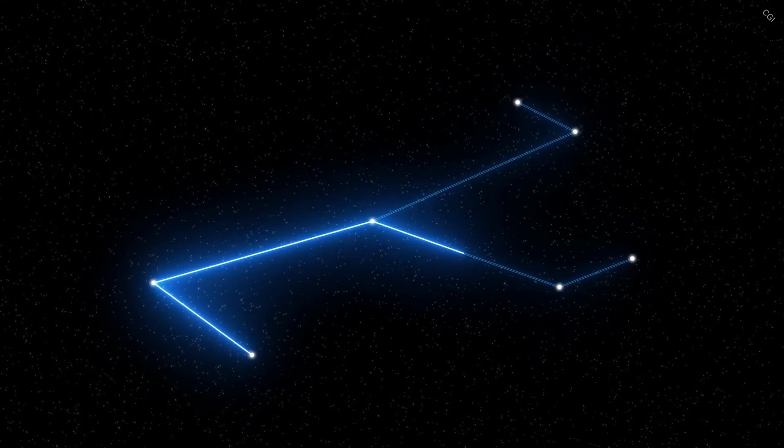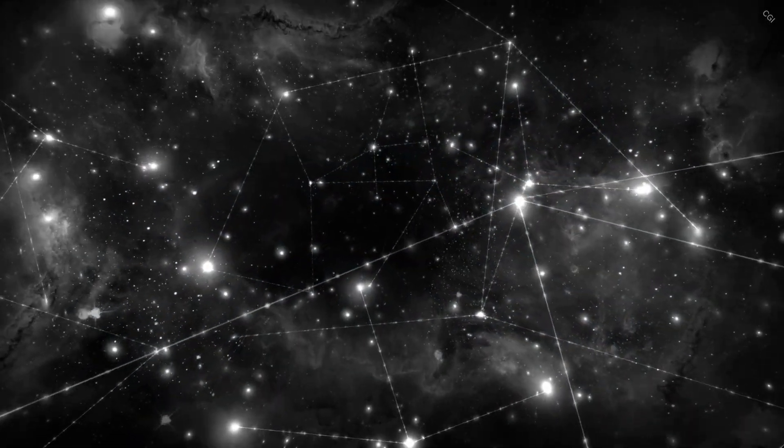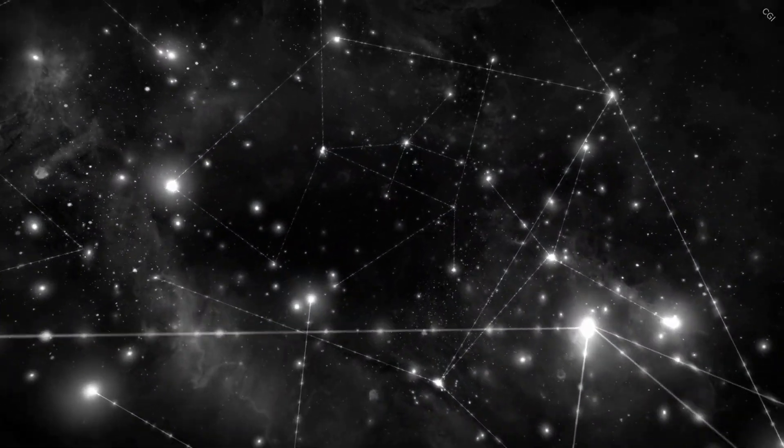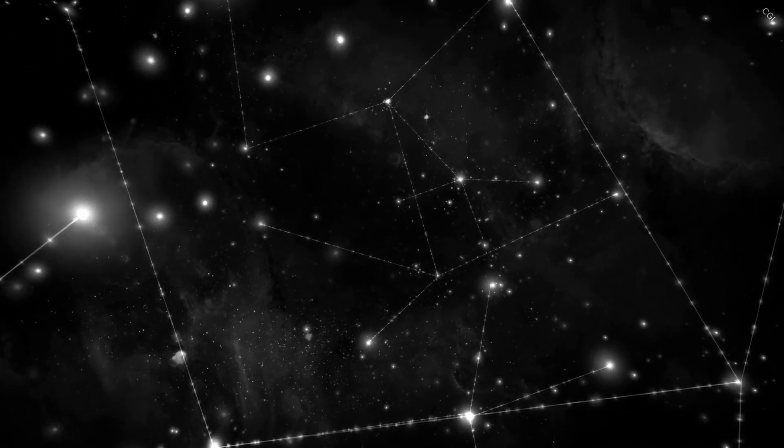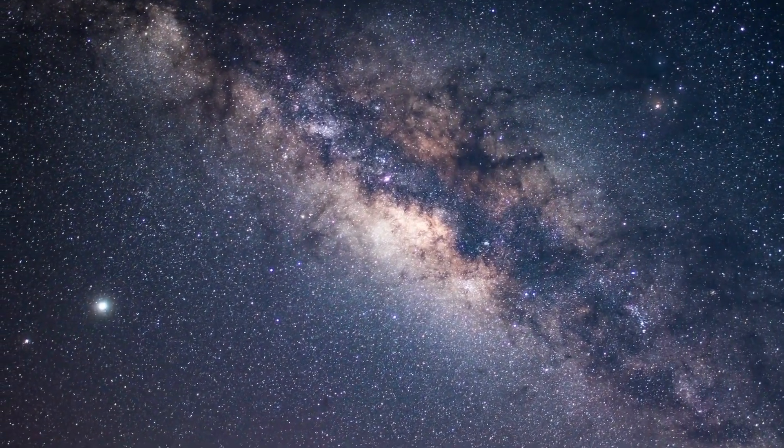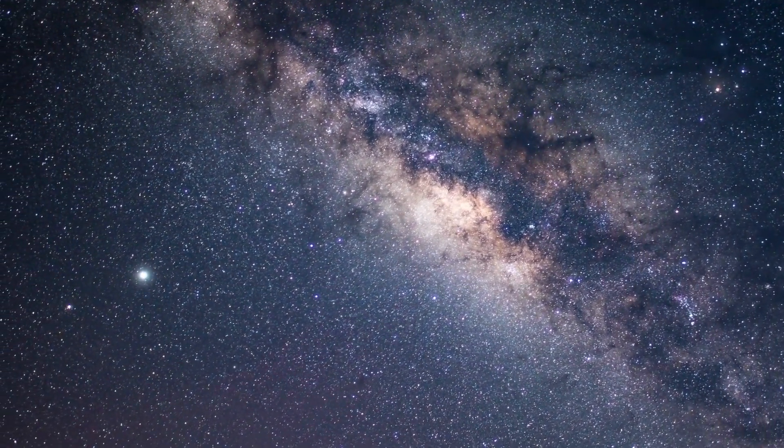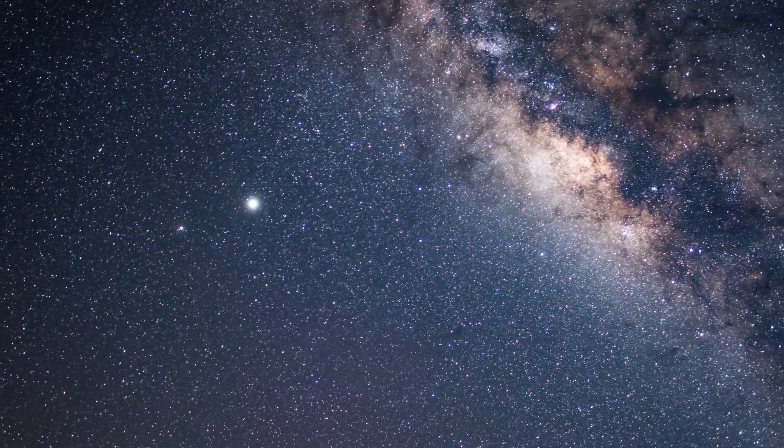Red Rectangle Nebula is located in the constellation of Monoceros, or the Unicorn, which is located 2,300 light-years from Earth. Also known as HD 44179, Red Rectangle Nebula was discovered during a rocket flight launched to perform an infrared survey of the sky in 1973.